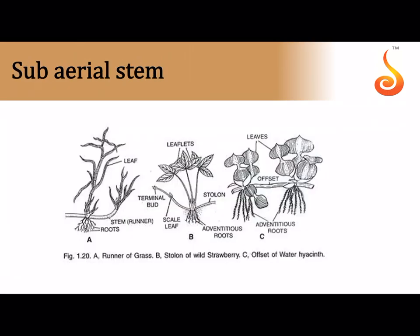The runner grows horizontally from the base of the main stem and at regular intervals its nodes give out leafy shoots growing upright. The stolon emerges from the base of the main stem, arches upward, meets the ground, and forms a new shoot and root system — another stem grows and arches again to give rise to a daughter plant. An offset, seen only in aquatic plants, is similar to a runner and has a single internode.